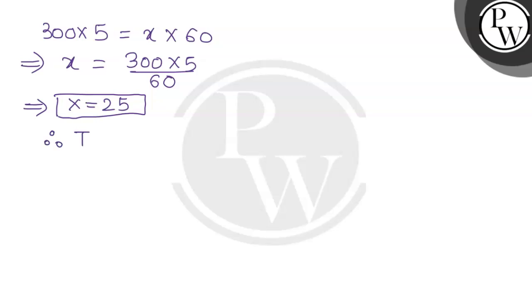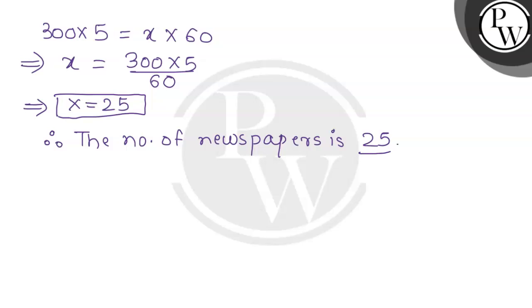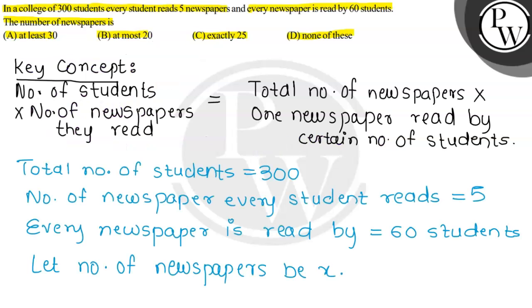Therefore, the number of newspapers is 25. So the final answer is option number C: exactly 25. Hope you understood it well. Best of luck. Thank you.